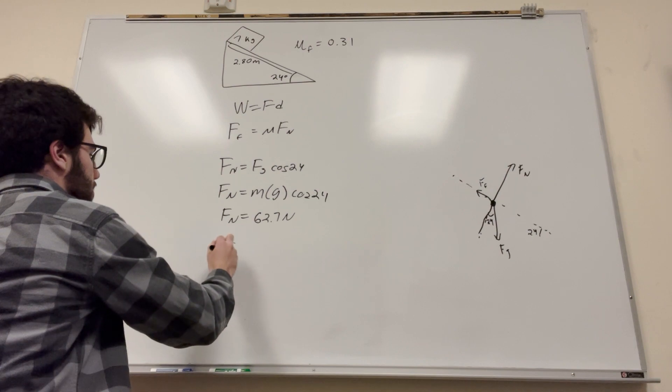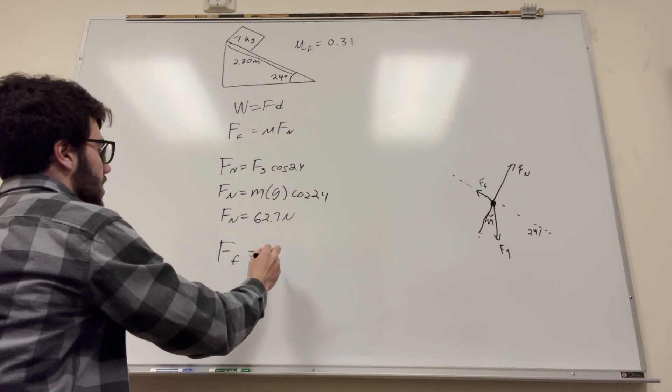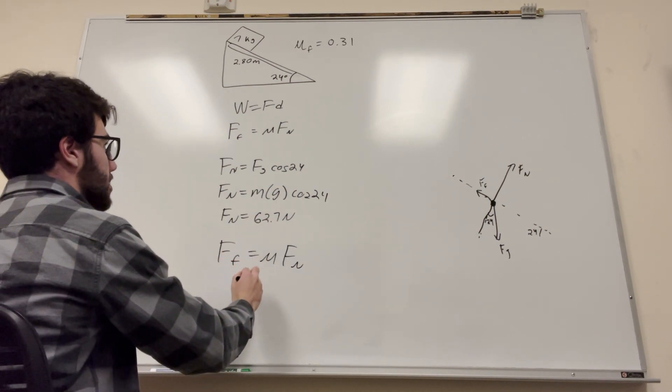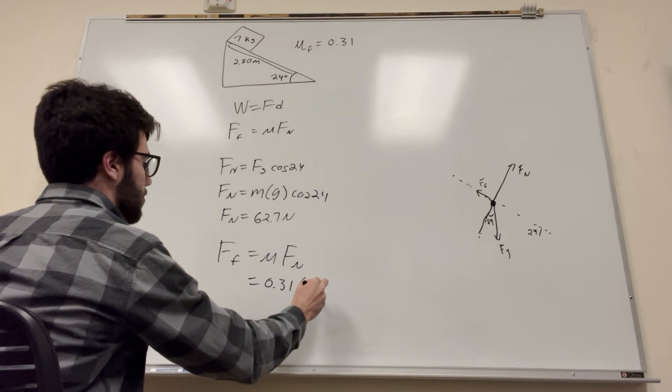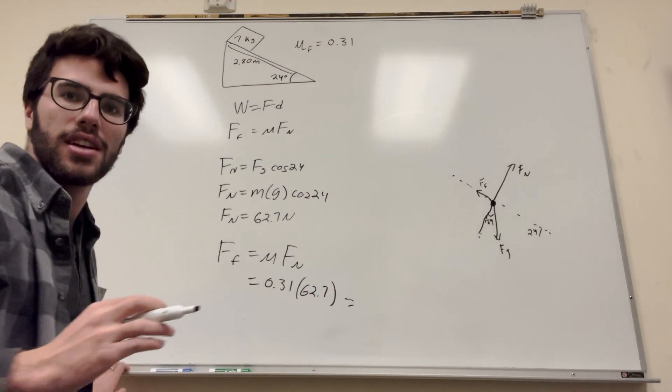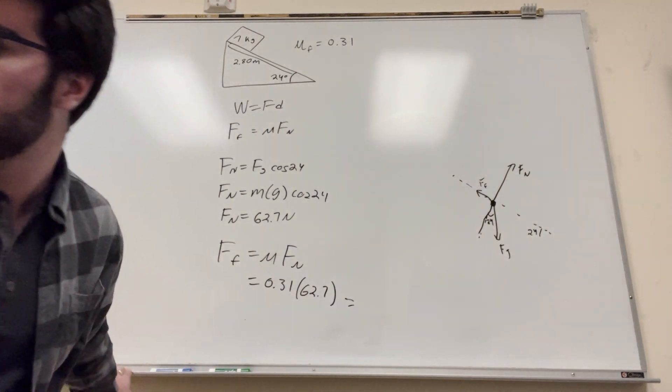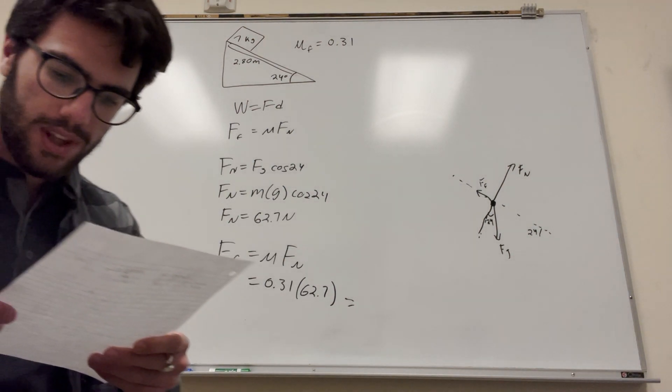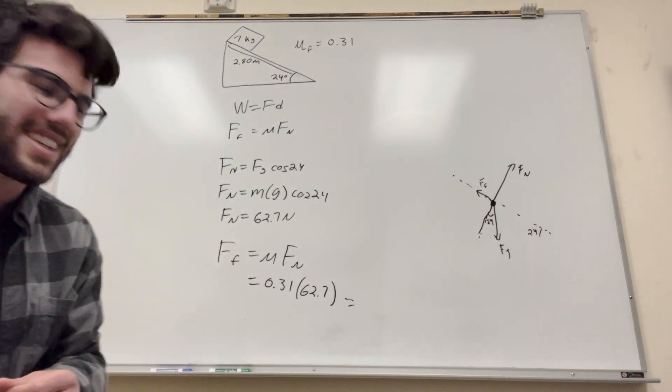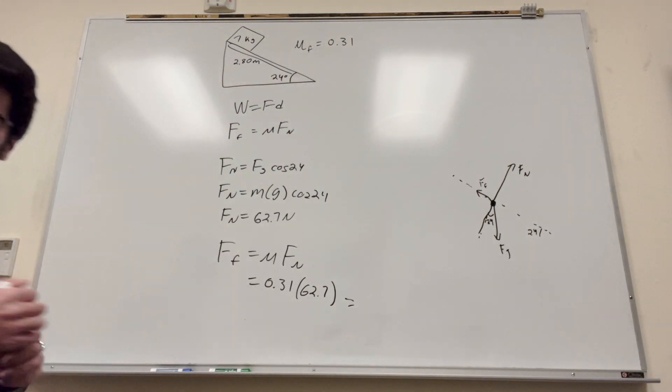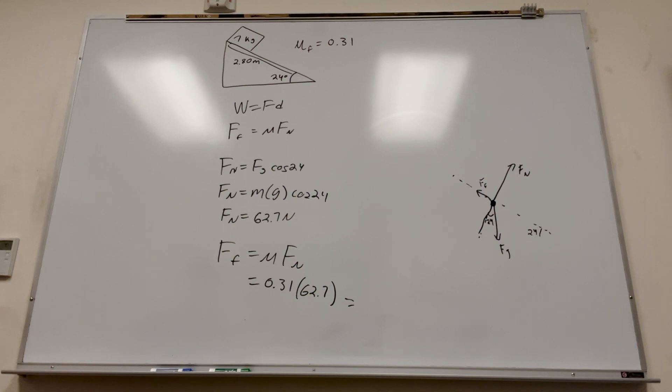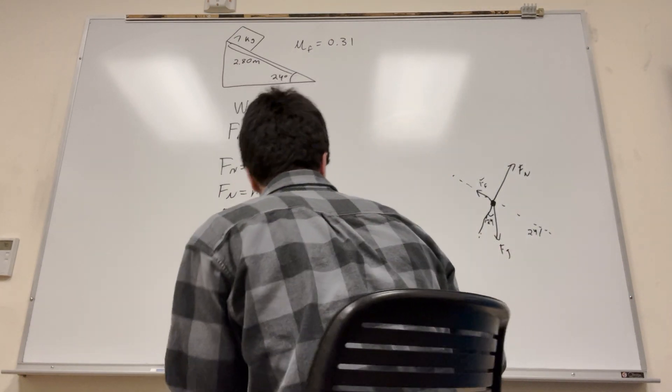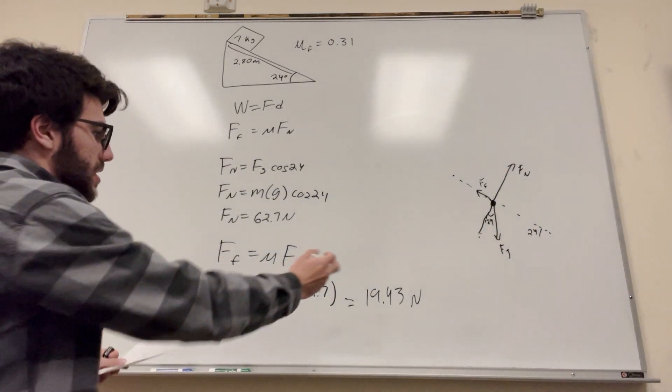Okay, so now we have force normal. We can plug it into this equation. Force of friction is equal to the coefficient times force normal. So it's going to be equal to 0.31 times 62.7. And you're going to end up getting... Yeah, we're getting force right now. Okay, so the force is equal to negative 19.43, or it's 19.43 newtons.